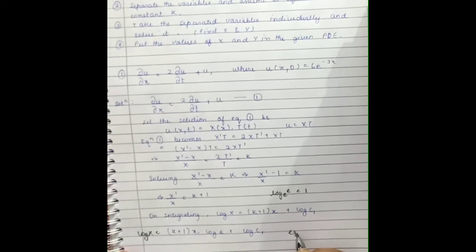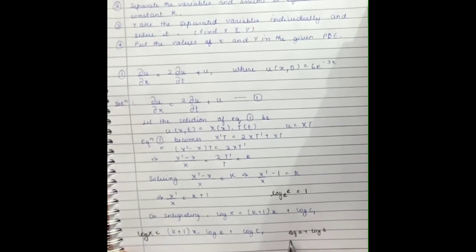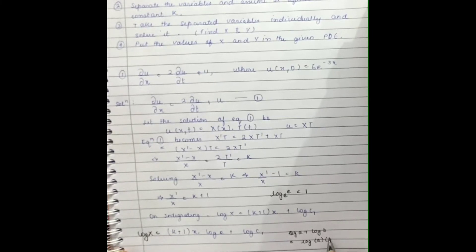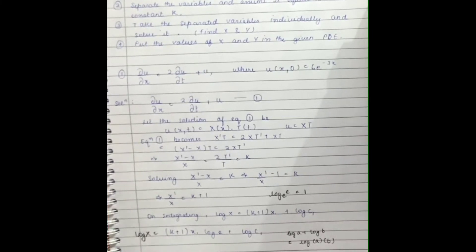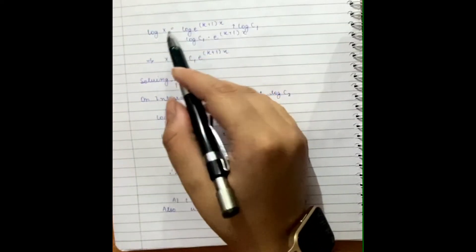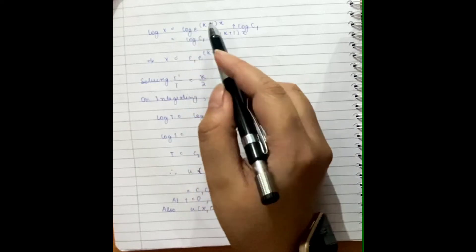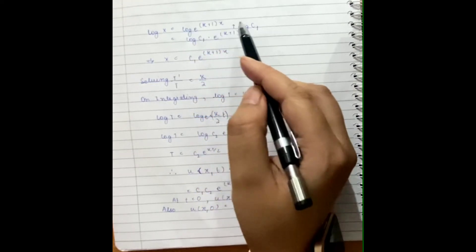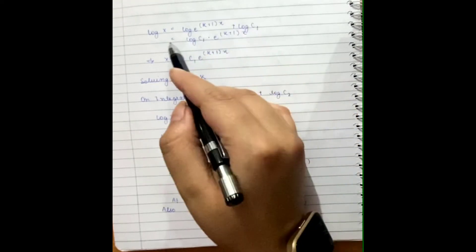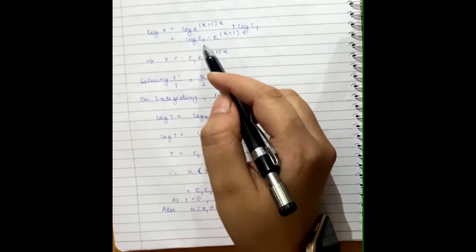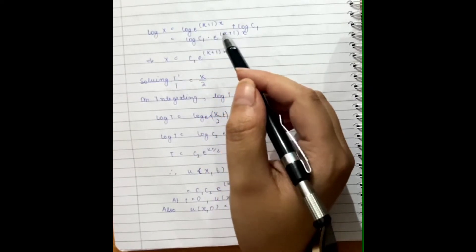As we know that log a + log b = log(a·b), we are doing the same thing here. Taking log(a·b), we will get log X = log[e^((k+1)x)] + log c₁ = log[c₁·e^((k+1)x)]. So X = c₁e^((k+1)x).